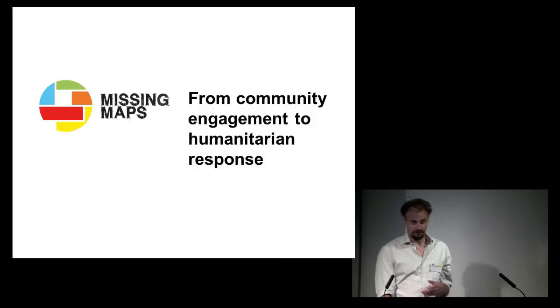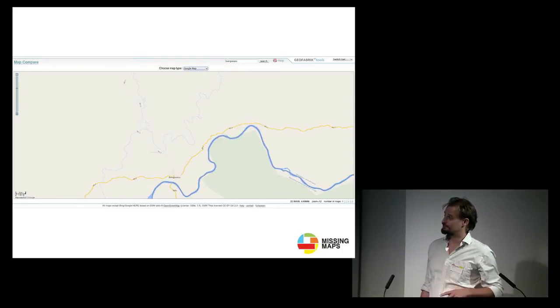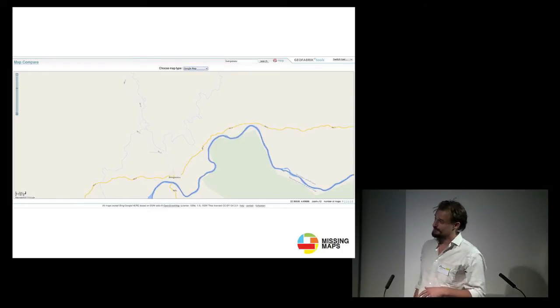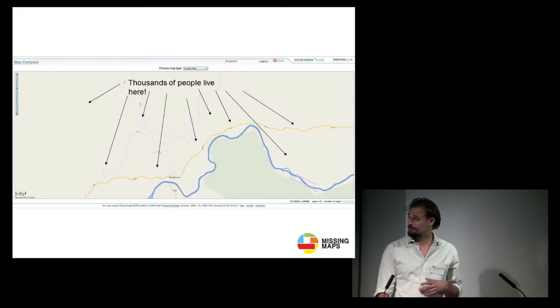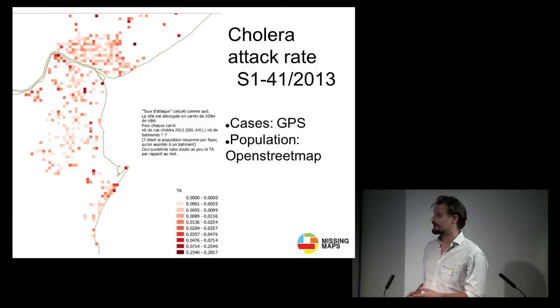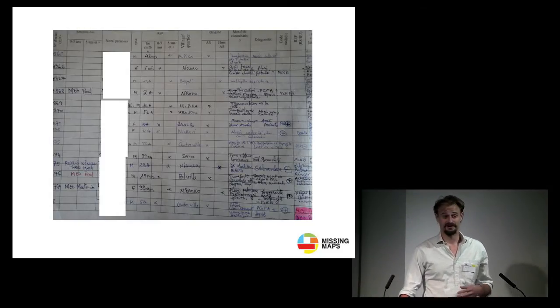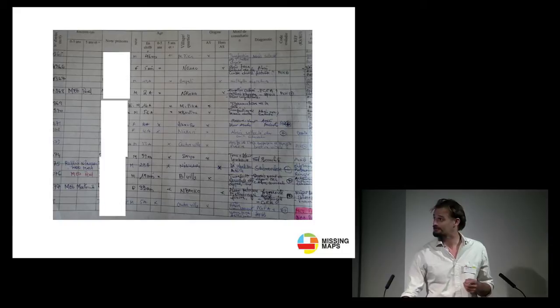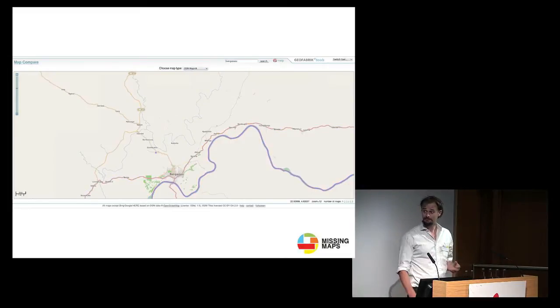NGOs struggle with a lack of freely accessible mapping data. If you looked at the Google map of Bangasu Sioux Prefecture in Central African Republic, you'd be forgiven for thinking that nobody lives there. But actually, thousands of people live there. If you are trying to respond to a cholera outbreak and you have base map data and patient data, you can make something like this, where you can visualise your cholera cases, where they're occurring, how dense they are. Without base map data, it looks more like this.